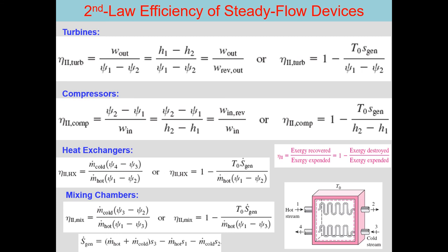More specifically, we can find out the equations for second law efficiencies of various steady flow devices. For a turbine, it is given by (H₁ − H₂) divided by the exergy change ψ₁ − ψ₂. In terms of entropy generation, it can also be expressed as 1 minus T₀ × S_gen divided by the exergy input, since T₀ × S_gen is the exergy destroyed. So knowing the exergy destroyed and the exergy input, we can calculate the second law efficiency.